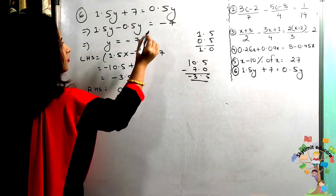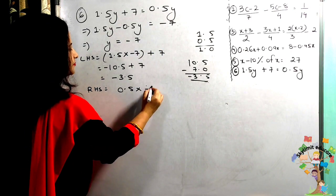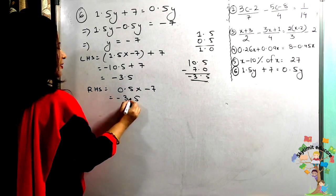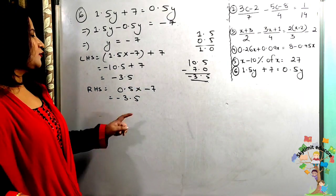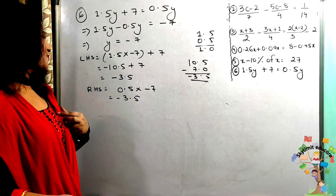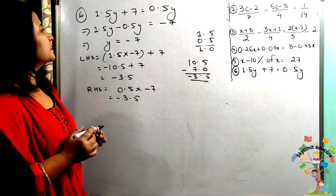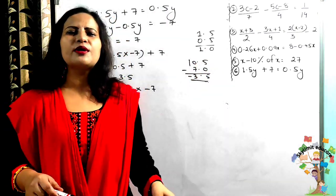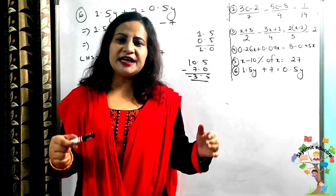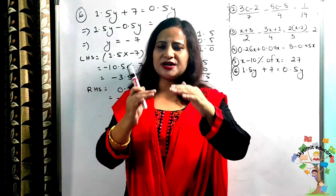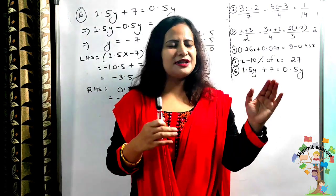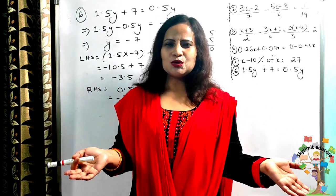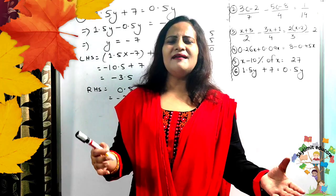Verifying: left hand side = 1.5 × (−7) + 7 = −10.5 + 7 = −3.5. Right hand side = 0.5 × (−7) = −3.5. Left hand side equals right hand side — verified. With this we end the session. I hope you understood each step. Use these examples to complete your exercise, and till the next class, take care and study well.